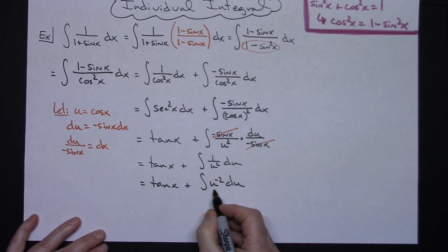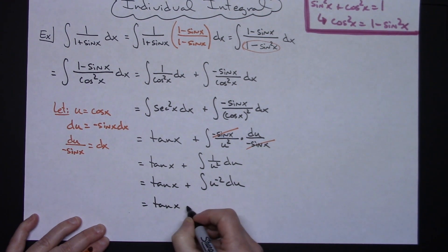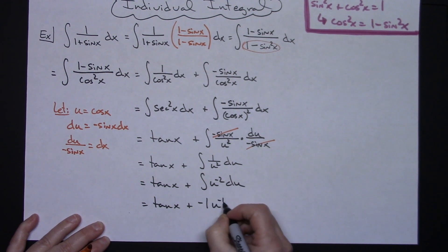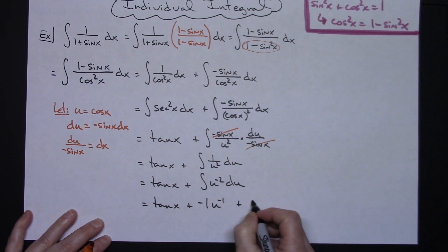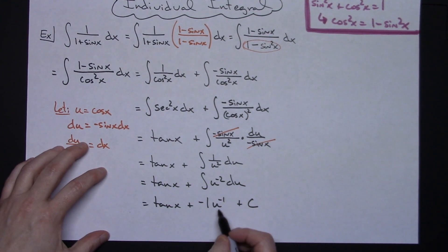All right we should all be able to integrate this one relatively simply here. Tangent x plus add 1 to both sides put it down in front so then we'll have a negative u to the negative 1 we go ahead and throw in that plus c now since both of them are integrated.